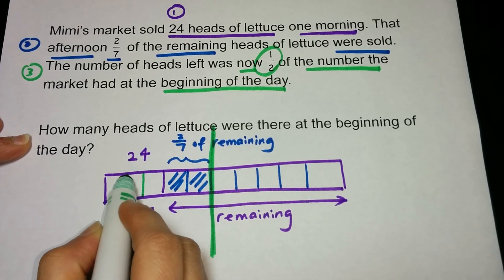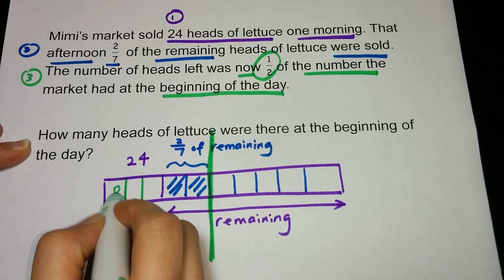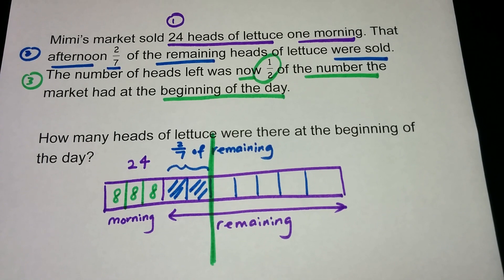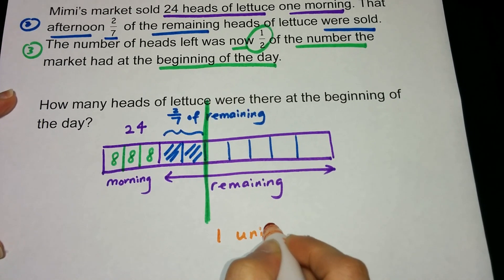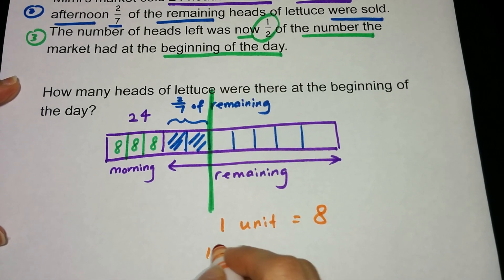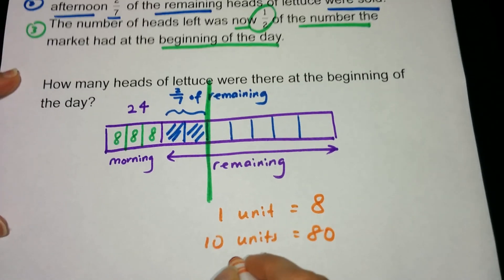So this must be three. For three parts to equal 24, each must be 8. So one unit equals 8, 10 units equals 80, and the answer is 80.